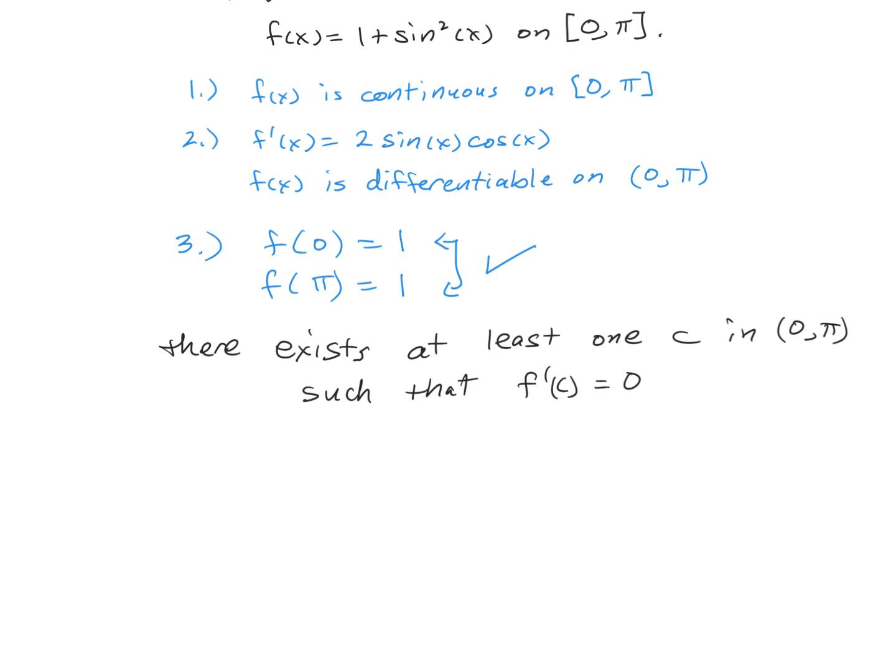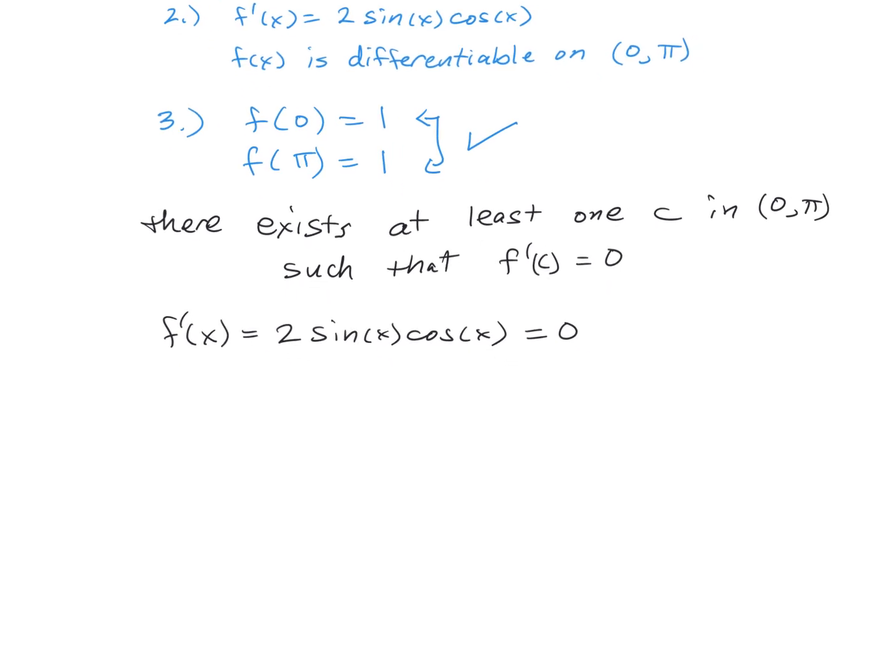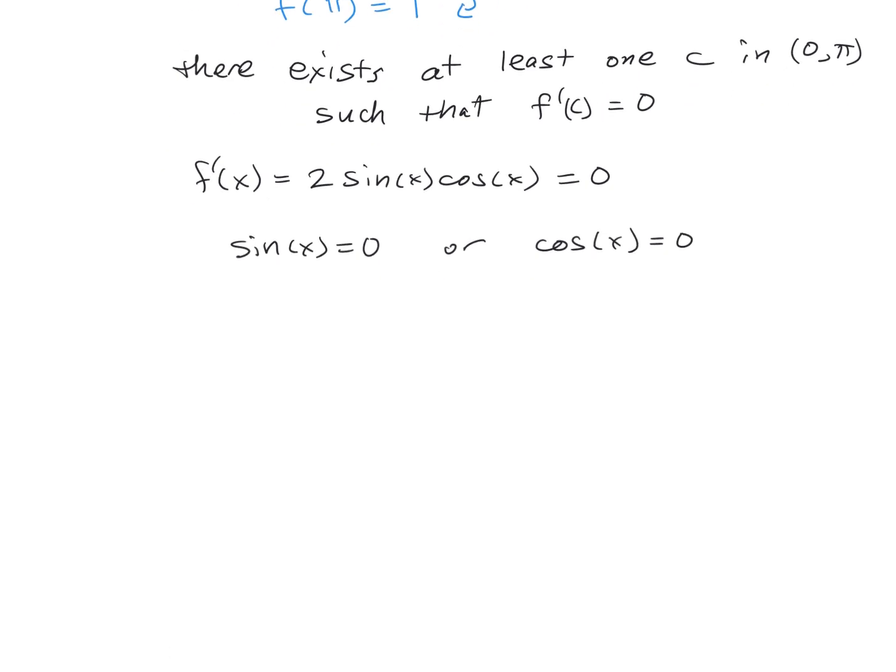And to find this location, we just set our derivative equal to 0. So, f prime of x, which we said earlier, is 2 times the sine of x times the cosine of x is equal to 0. That's already written in the simplest form we can, besides getting into double angles, which is not necessary. So, we have the sine of x equal to 0. We need to find those values, or we have to look at where the cosine of x is equal to 0. Well, we know the sine of x is equal to 0 when x is equal to 0 and pi,